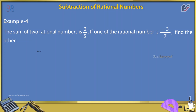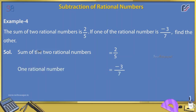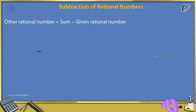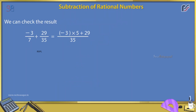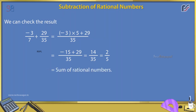Example 4: The sum of two rational numbers is 2/5. If one of the rational numbers is -3/7, find the other. Solution: Sum = 2/5, one number = -3/7. Other number = sum - given number = 2/5 - (-3/7) = 2/5 + 3/7 = (2 × 7 + 3 × 5)/35 = (14 + 15)/35 = 29/35.